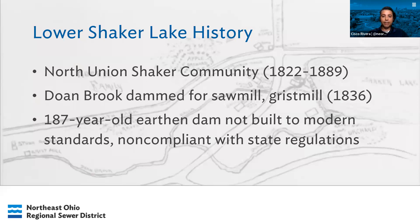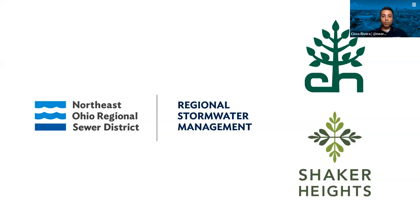The Lower Shaker Lake area was the home of the North Union Shaker community from 1822 to 1889. As part of their commerce and way of life, they dammed Domebrook in 1836 for sawmill and gristmill production — milling lumber and grain. The earthen dam, which is mostly made of soil, is currently non-compliant with modern-day safety regulations, and that's why we're here today. Domebrook flows into Lower Lake and is a regional stormwater asset, which is why the district is working in collaboration with Cleveland Heights and Shaker Heights and other stakeholders to address the issues at the dam.